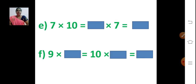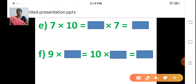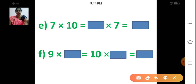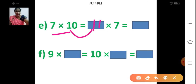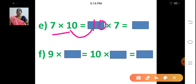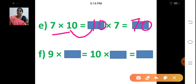Sum E: 7 into 10 is equal to ___ into 7. Change the order: 7 into 10 becomes 10 into 7. This 10 is missing here. 10 sevens are 70. Write 70. 7 into 10 is equal to 10 into 7 is equal to 70.